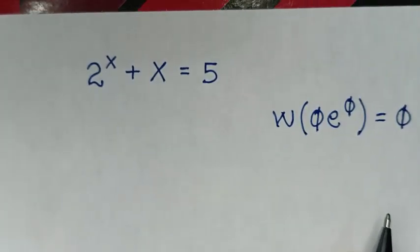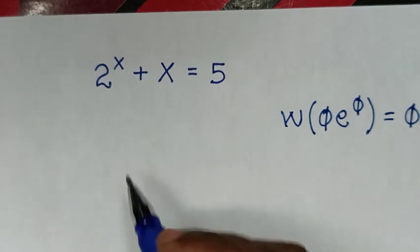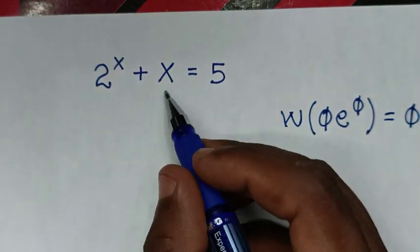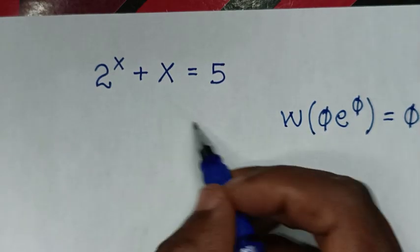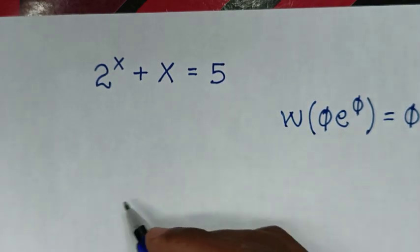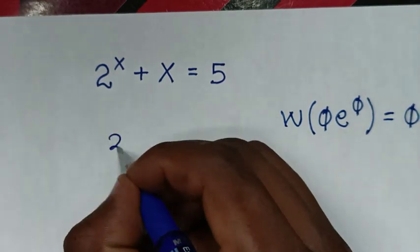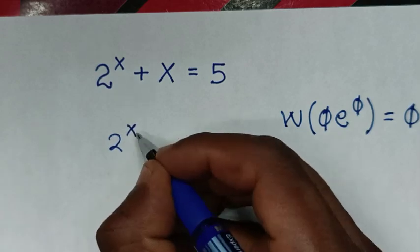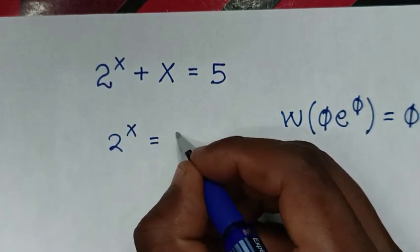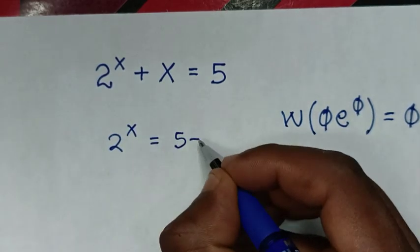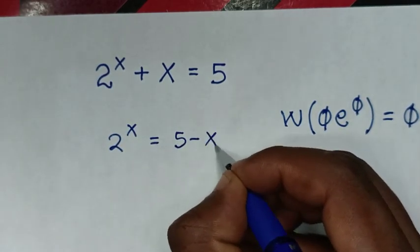Starting to solve, we'll take x to the other side. So it will be 2 to the power of x is equal to 5 minus x.